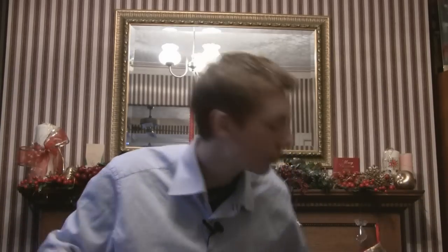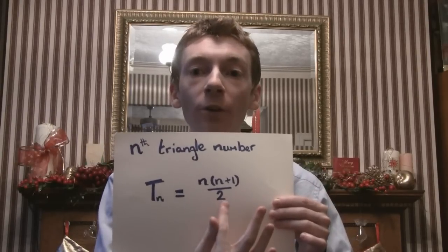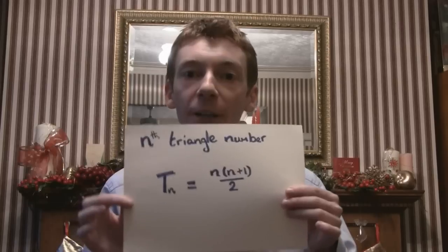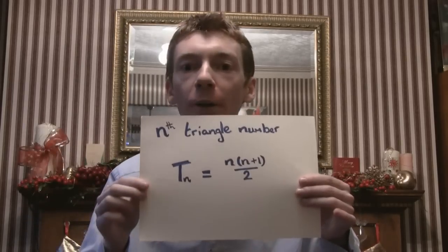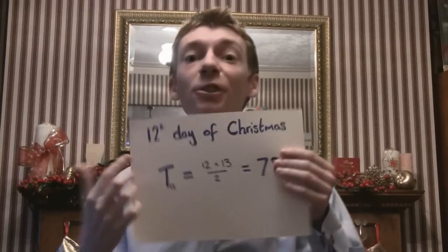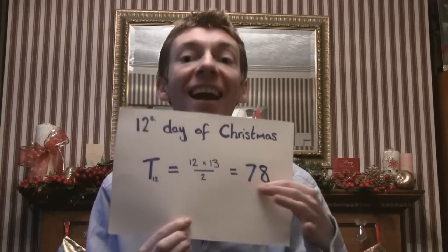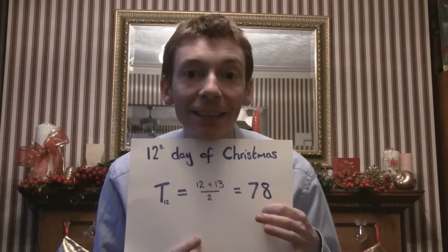Now you can do this in general. If you want to work out the nth triangle number, what you do is make a rectangle with n rows, n plus 1 columns, and then divide by 2 — and that's the nth triangle number. Now on the 12th day of Christmas you want to work out the 12th triangle number, which means it's 12 times 13, divide by 2, and you get 78 gifts.